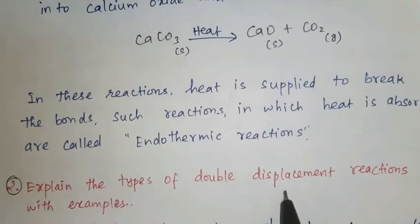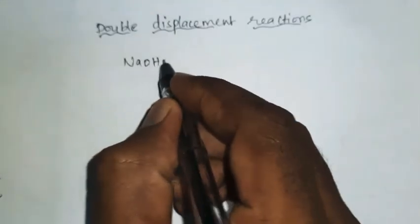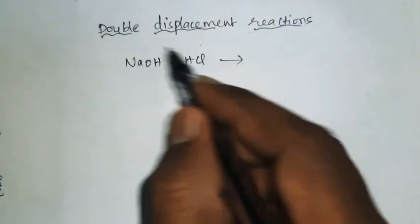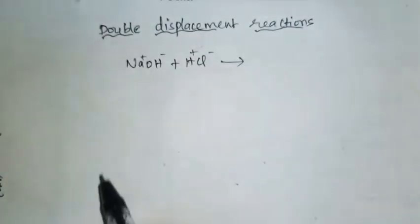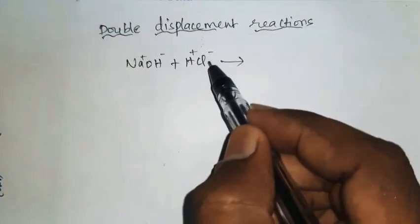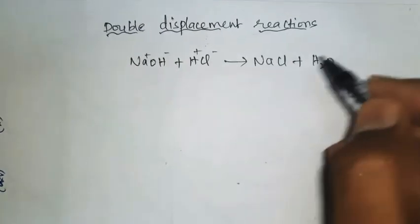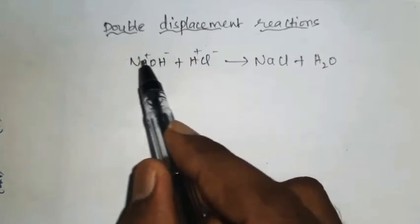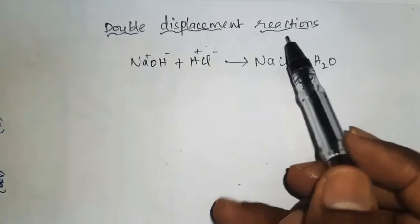Question number 2: Explain the types of double displacement reactions with examples. Consider two compounds — sodium hydroxide and hydrochloric acid. When two compounds react, their ions are interchanged. Here the ions are Na⁺ and OH⁻, and here H⁺ and Cl⁻. Na⁺ makes a bond with Cl⁻ to form NaCl, and OH⁻ makes a bond with H⁺ to form H₂O. Such reactions where ions are interchanged are called double displacement reactions.